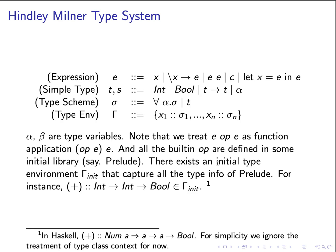It has a very similar syntax to simply typed lambda calculus except that we do not need to provide type annotations to the formal argument X in lambda abstractions. In addition, we have the let expression. For types, denoted by the symbol t or s, we can have primitive or base types such as int and bool, advanced types such as the arrow type which is a function type, or a type variable alpha.